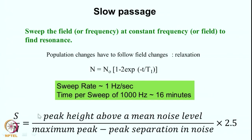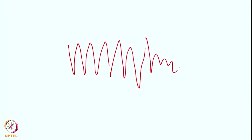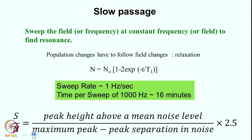Now when you actually look at the spectrum, what is the signal-to-noise ratio? You take the peak height of the signal, then you measure the noise in a region where there is no signal. You take the peak-to-peak separation of the noise. You measure the peak height above the mean noise level, divide by the peak-to-peak noise separation, and multiply by a factor of 2.5 — this factor arises for stochastic reasons — and that is your signal-to-noise ratio.